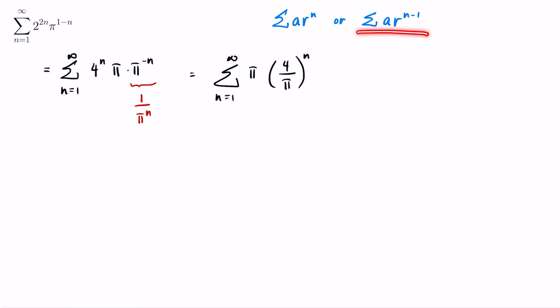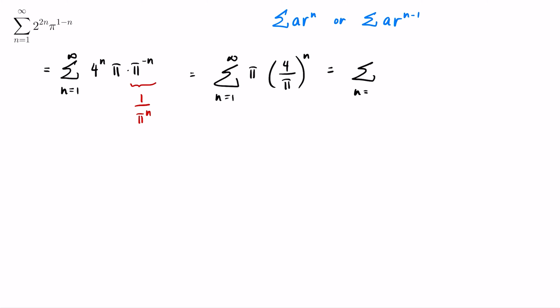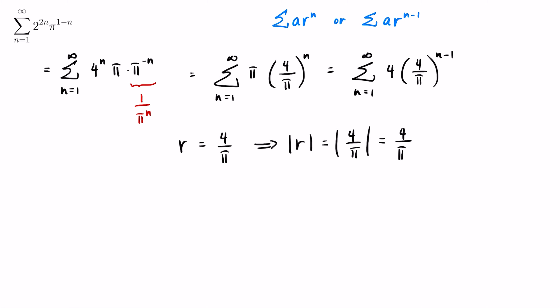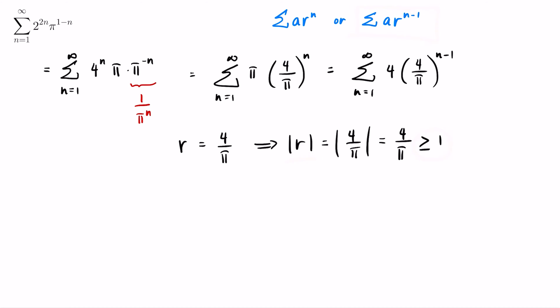If you want to write it in the A·R^(N−1) form, you factor out one factor of 4 over π, giving summation of π times (4/π) — which equals 4 — times (4/π)^(N−1). The common ratio remains 4 over π. Since π is less than 4, the absolute value of R equals 4 over π, which is greater than 1. Therefore, we conclude that this series is divergent and does not have a sum.